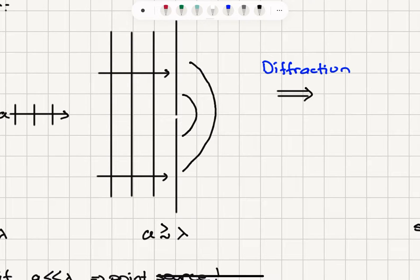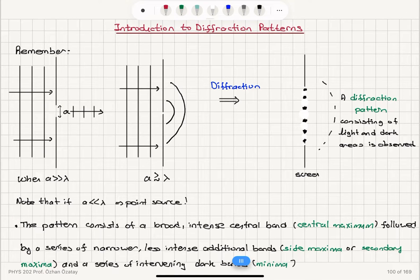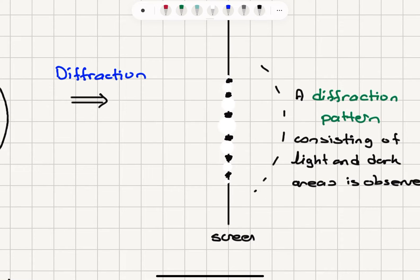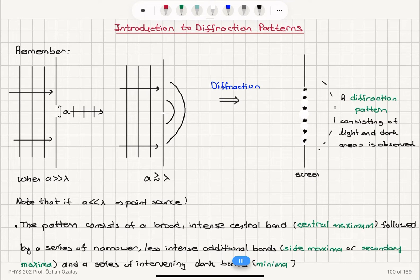If the opening is really, really small, it will act like a point source. This effect — the deformation of plane wavefronts into spherical wavefronts — is called diffraction, and it forms a diffraction pattern on a screen. The pattern consists of light and dark areas: a central bright region followed by dark regions. The central bright region is quite wide. Remember that if A is much less than lambda, the slit acts as a point source producing perfectly spherical waves.